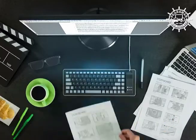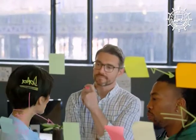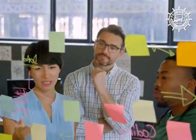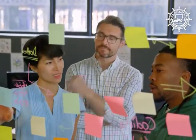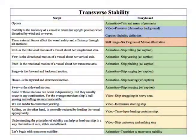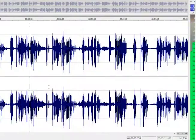Most important, the storyboard should help ensure everyone involved can visualize the video production and plan accordingly. Here's the storyboard I used for the transverse stability instructional video. Notice I color-code my storyboard. The presenter's screen time, for example, is colored blue. If the presenter would have been on screen several times, I would have recorded all her screen times in one session, and the off-screen times would have been recorded as voiceover.